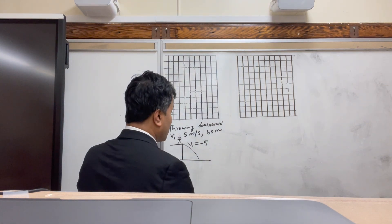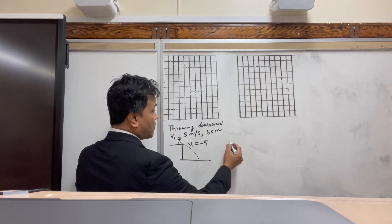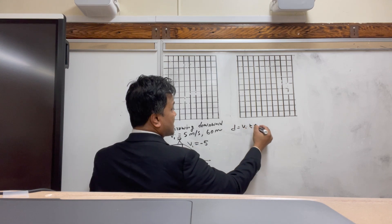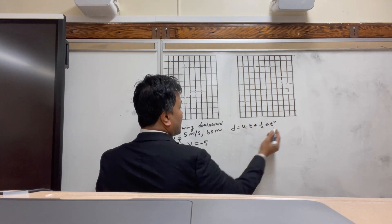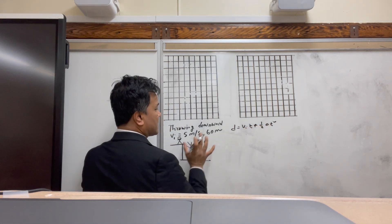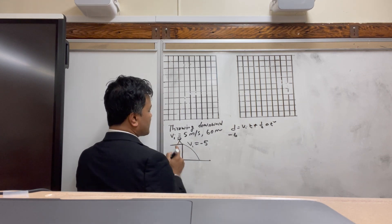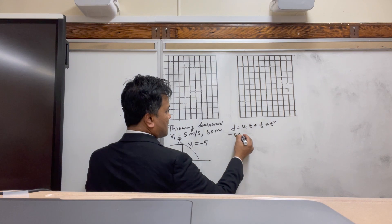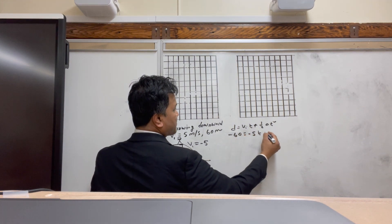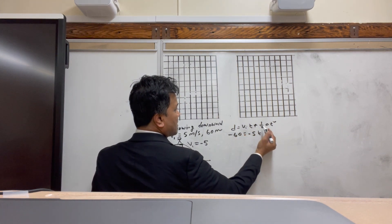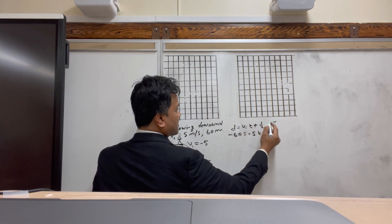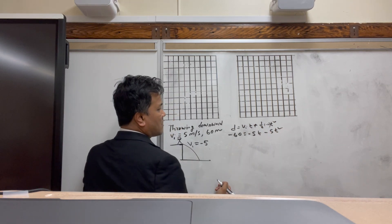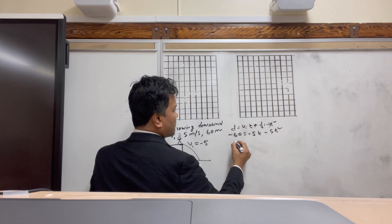To find the time, use the quadratic equation: d = v₀t + ½at². Here d is negative 60, because with respect to you, when you look down you see negative 60. So: -60 = -5t - 5t².